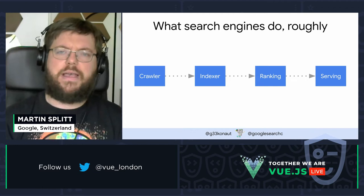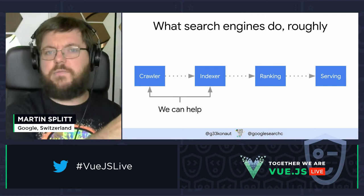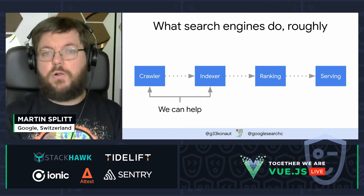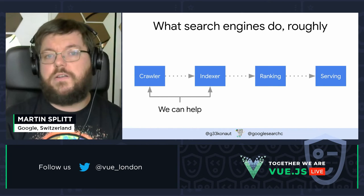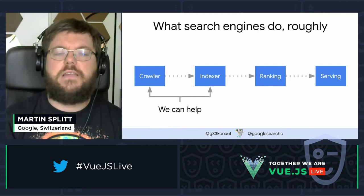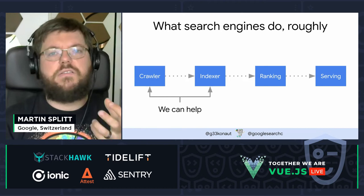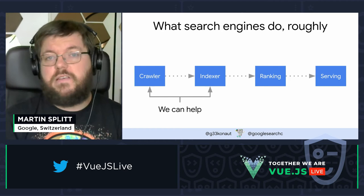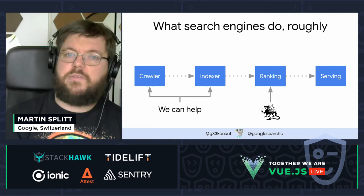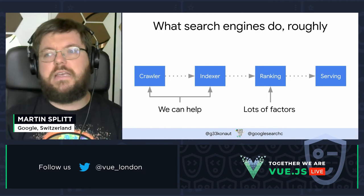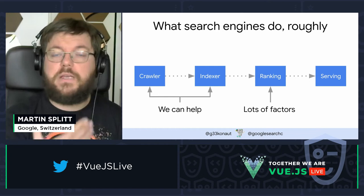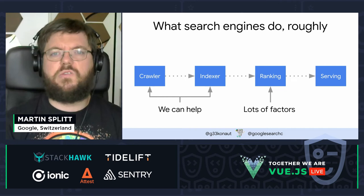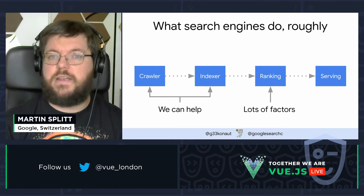As developers, we have fundamental impact on this process because both the server side and the client side influence whether a website or web application can be crawled and indexed. If we can't make requests to certain pieces of content, or if the URL gives us a 404 or 500 error, we can't process it further. If there's something in the JavaScript that prevents us from seeing any of the content, we don't know what the website is about and can't put it in the index — and if it's not indexed, we can't rank it. A lot of people focus on ranking, but I'd focus more on crawling and indexing, because that's where you can have a lot of impact.